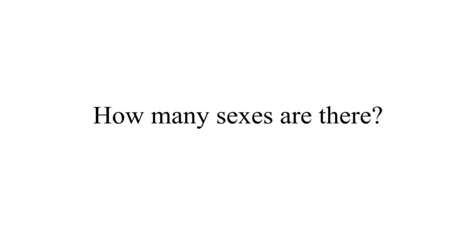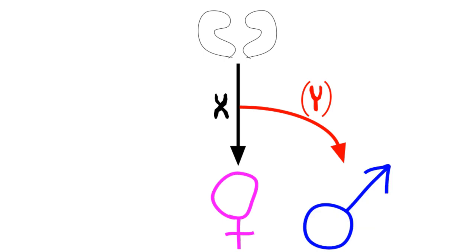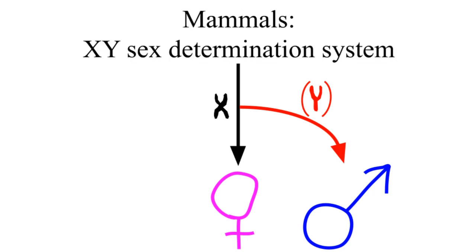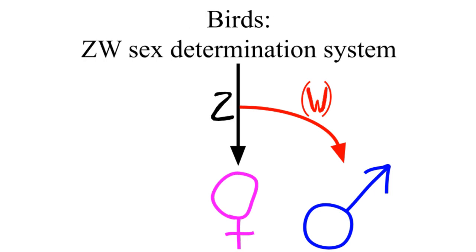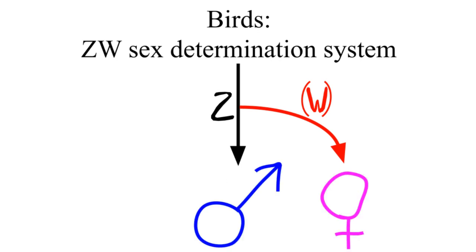The question was: how many sexes are there? In humans, ovaries can be thought of as the default, and testes are an augmentation added by an alternate chromosome — hence the name XY sex determination system. In other animals, it can be different. Birds have a ZW sex determination system, where again there's a default and an augmentation, but in birds, males are the default, and females are an augmentation added on by the W chromosome.